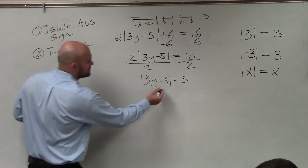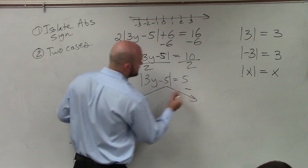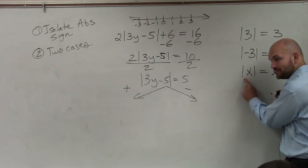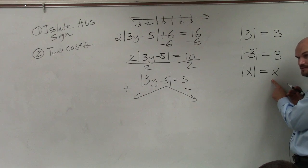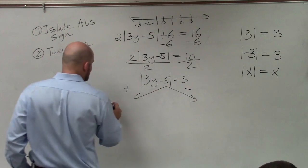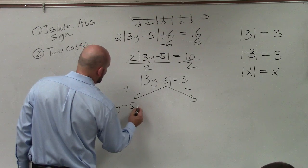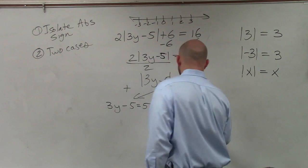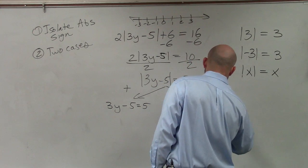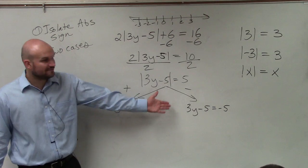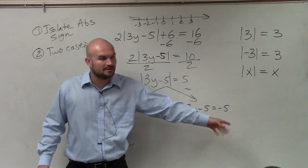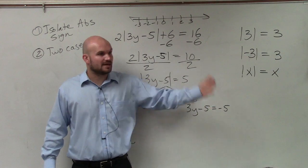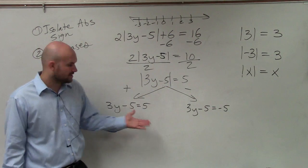You're going to have two cases — one case where it's positive and one case where it's negative. Because remember, you can plug in a negative number or a positive number and it's always going to equal the same value. The positive case is easy: just rewrite the equation with no absolute value sign, so 3y − 5 = 5. For the negative case, you negate the other side: 3y − 5 = −5. And if there's an expression on the other side, make sure you apply the distributive property.